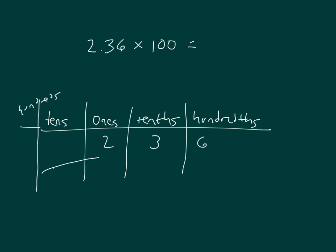When we're multiplying by 100, each of those ones would become 100. And there's two of them. The tenths become tens, and the hundredths become ones. So 6 hundredths multiplied by 100 is 6 ones.